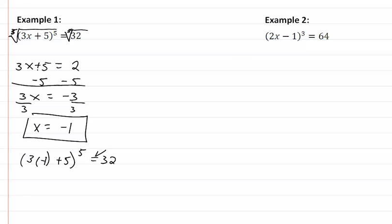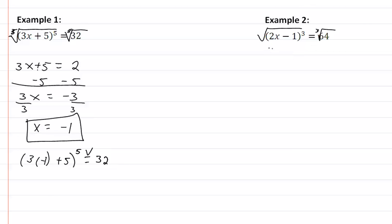On our second example, we have a third power, so we're going to take the third root. So we get 2x minus 1 equal to the cubic root of 64, which should be 4. So now we have 2x minus 1 equal to 4, add 1 to both sides. We get 2x equal to 5, divide by 2, and we get x is equal to 5 halves.